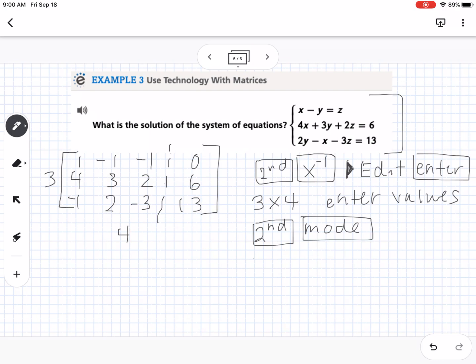Then you're going to hit 2nd and x to the negative 1, arrow over to math, and you want to find B, which says RREF. What that stands for—I'll write it up here—is reduced row echelon form. That means it's going to be all 1s and 0s and give us our solution. Then you're going to hit enter.